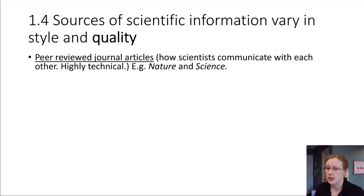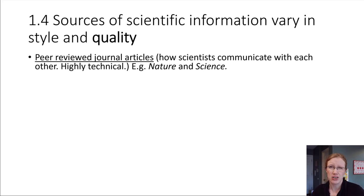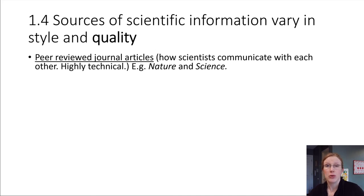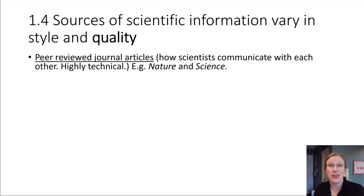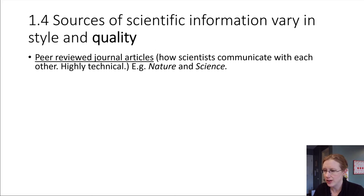Scientists go and look in journal articles to find information. Usually the language is very technical and it's really dry reading — not necessarily fun — but it's very precise and accurate, and it conveys everything you need to know in order to be able to replicate the experiment. So that's one extreme: very high quality, peer-reviewed journal articles.